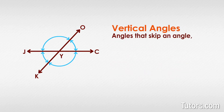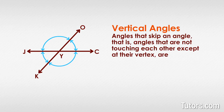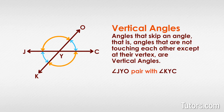In our same example, angles that skip an angle — that is, angles that are not touching each other except at their vertex — are vertical angles. Here the word vertical means relating to a vertex, not up and down. Vertical angles are opposite angles; they share only their vertex point. Two intersecting lines create two pairs of vertical angles. Angle J-Y-O and angle K-Y-C make a pair — they touch only at point Y. Then angle K-Y-J and angle O-Y-C make a pair as well, also touching only at point Y.